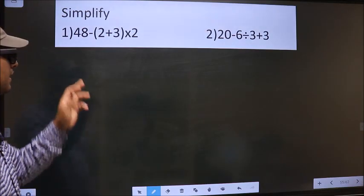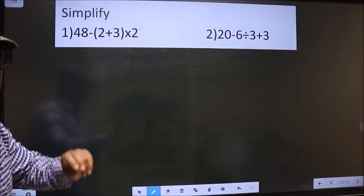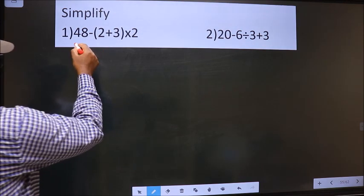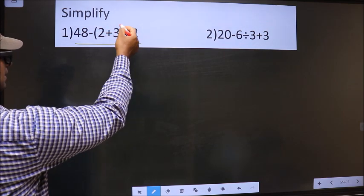Let us calculate 48 minus 2 plus 3 in brackets into 2. In this expression, we have subtraction, addition, multiplication and brackets.